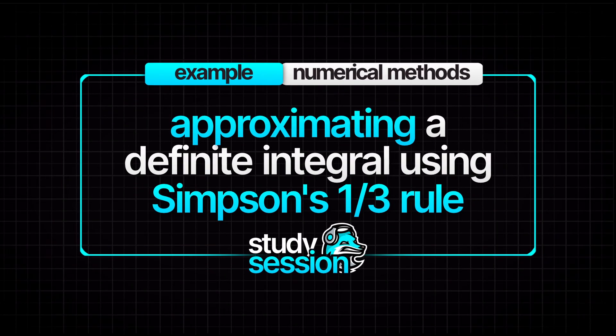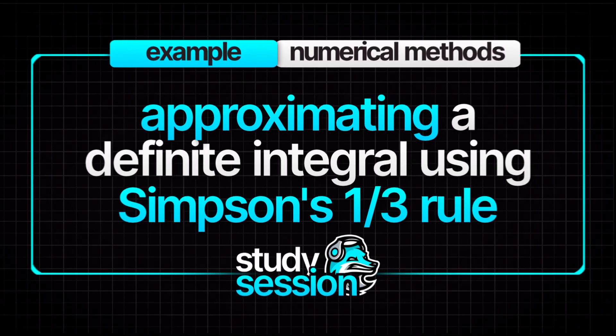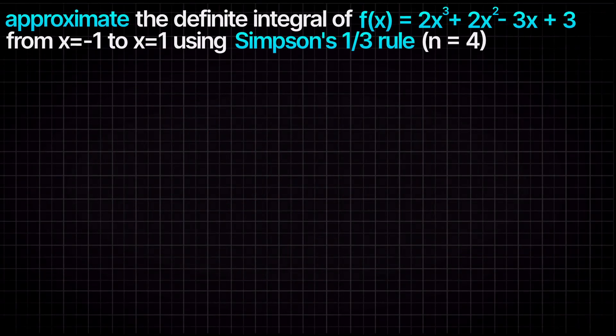Hey everyone, in this example video we are asked to approximate the following definite integral from -1 to 1 using Simpson's one-third rule with 4 subintervals.